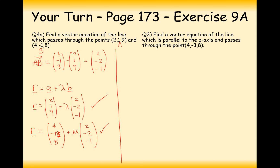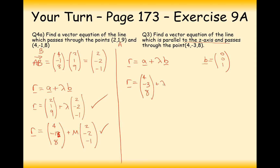Question 3: find a vector equation of the line parallel to the z-axis passing through (4, -3, 8). In r equals a plus lambda b, if the line is parallel to the z-axis it must not change in x or y, only in z, so the direction vector b is (0, 0, 1). Starting at (4, -3, 8) and moving parallel to the z-axis, the vector equation is r equals (4, -3, 8) plus lambda (0, 0, 1). The starting point goes at the front and the direction vector goes next to the lambda.